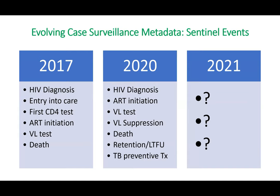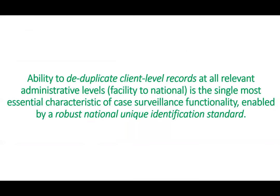Looking at the evolving case surveillance metadata, in our 2017 guidelines we defined six sentinel events. In our 2020 SI guidelines on aggregate data, we brought in sentinel events around viral suppression, retention, last follow-up, and TB preventive therapy. We're actually starting up the process of revising these guidelines already because it's been very dynamic, and in 2021 we're essentially going to review all this and make decisions on new metadata.